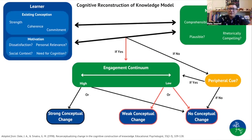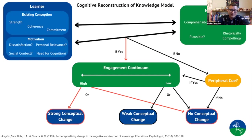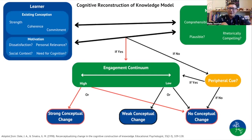The final outcome we're hoping for is when we have a motivated student who wants to reevaluate their conception, a clear, concise, coherent, plausible message, and students who are highly engaged with the material. Then and only then can we see strong conceptual change — students who permanently resolve their misconception and move to a more solid scientific understanding of the concept. Research also shows that there's always a possibility we can do everything right and students still will not resolve their misconceptions.